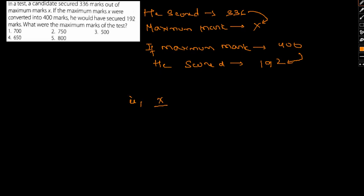That is, x by 336 times 100 will be equal to 192 by 400 times 100. Okay, 100 is cancelled out.